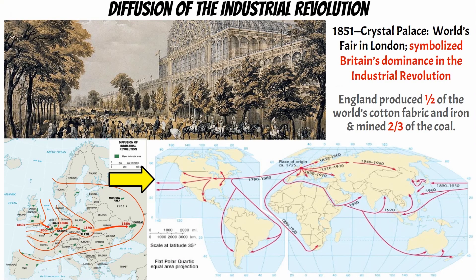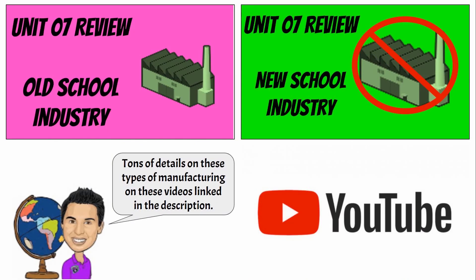England made a mistake: they threw a party at Crystal Palace at the World's Fair to show everyone how awesome they are. Because of this, the diffusion of the Industrial Revolution spread, mostly eastward, and eventually all over the world — the entire world began to industrialize all because of this party. For more detail on how industry works today, check the links in the description below for old school and new school industry videos.